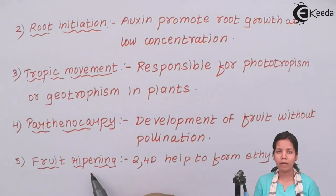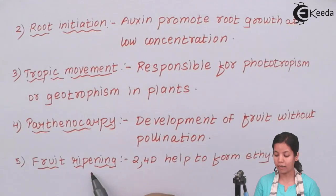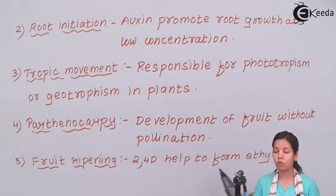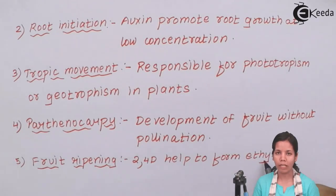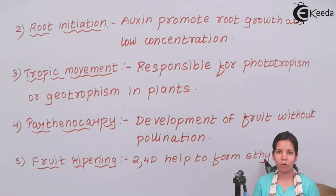Lastly, fruit ripening. Certain synthetic auxins like 2,4-D help in the formation of ethylene, and this hormone ethylene helps in the ripening of the fruit.